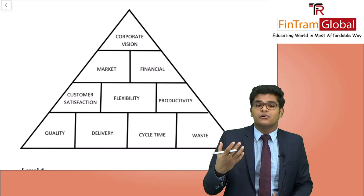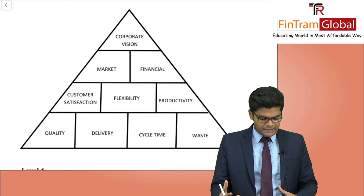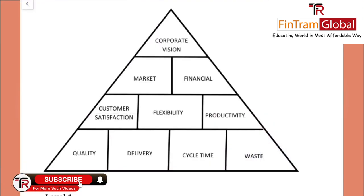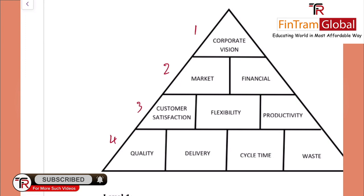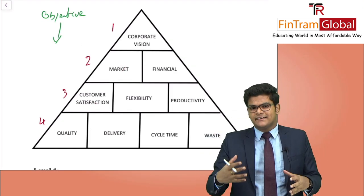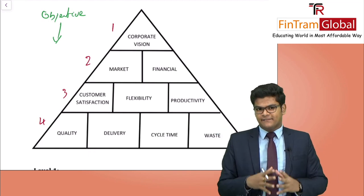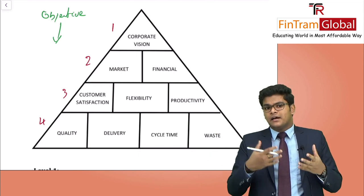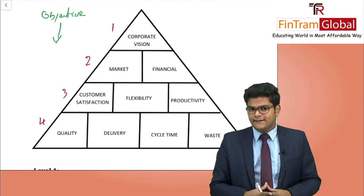At the top we have the corporate vision of the organisation. There are four levels in the pyramid. In Level 1 we have the corporate vision. In order to achieve that vision, we set objectives at Level 2 relating to the market — such as market share or market growth — as well as financial objectives, such as financial ratios. So the corporate objective is broken down into market objectives and financial objectives.